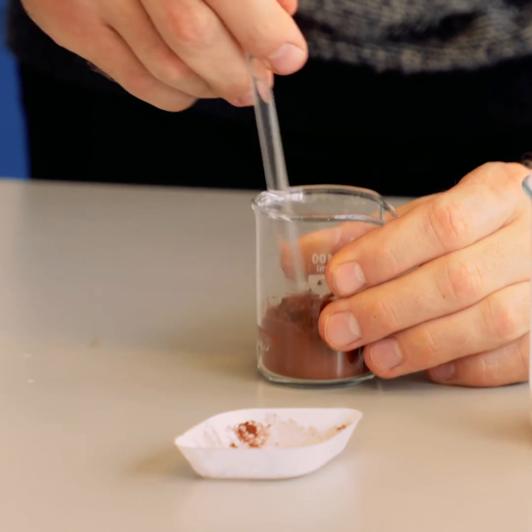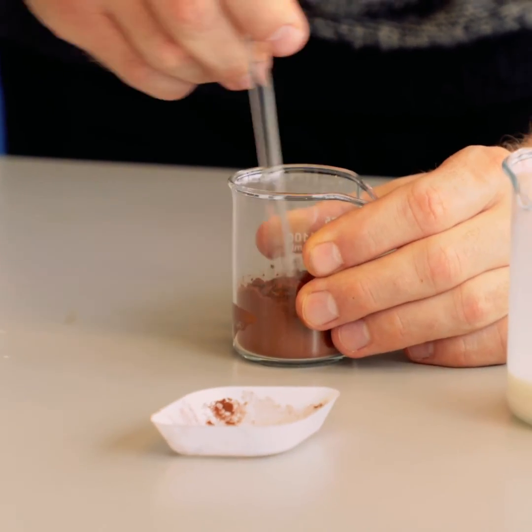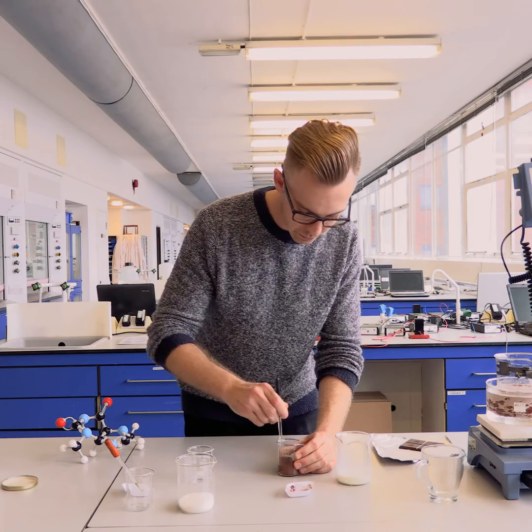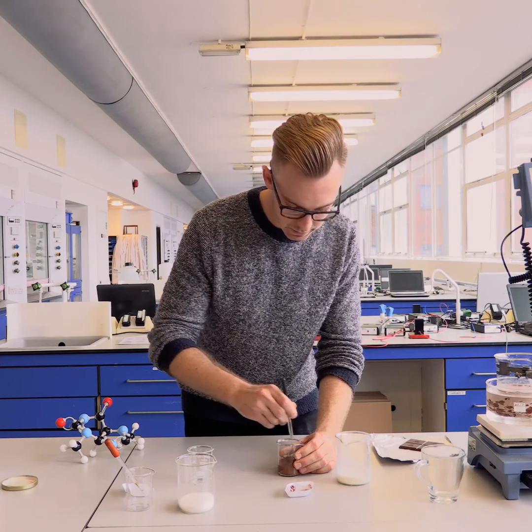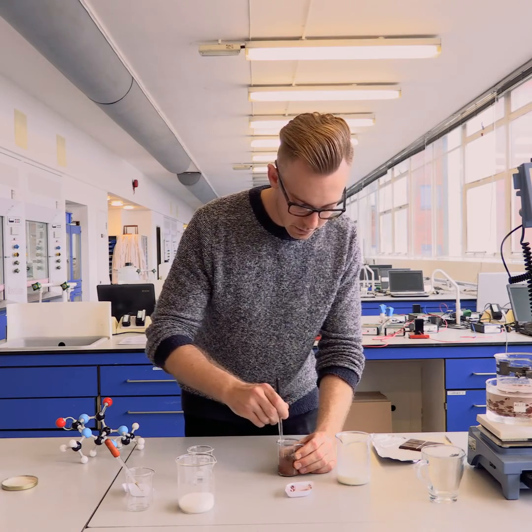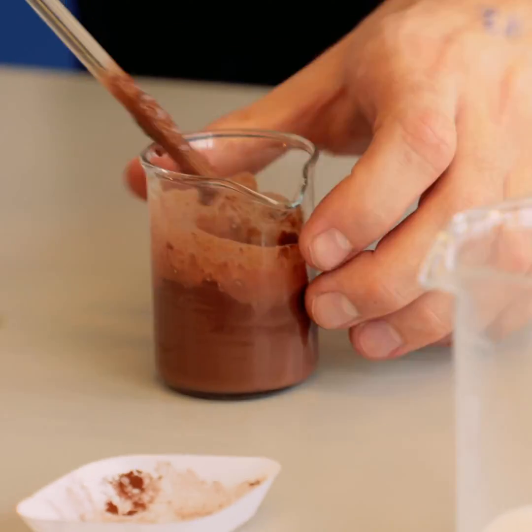By making the paste first, it enables the mechanical grinding of the lumps to allow the water molecules to reach the center, and yield a nice smooth hot chocolate product at the end.